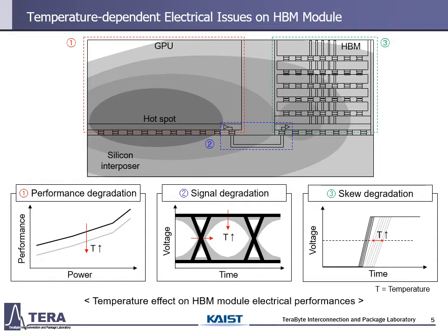In this slide, I'll talk about the temperature-dependent electrical issues on the HBM module of the graphics card, which is the target application of this research. In GPU, it adjusts thermal issues by the algorithmic method thermal throttling. Thermal throttling lowers the clock speed to reduce power consumption in the GPU, which can cool down the graphics card but causes performance degradation. Not only performance issues, but there are also signal integrity issues due to insufficient thermal management.